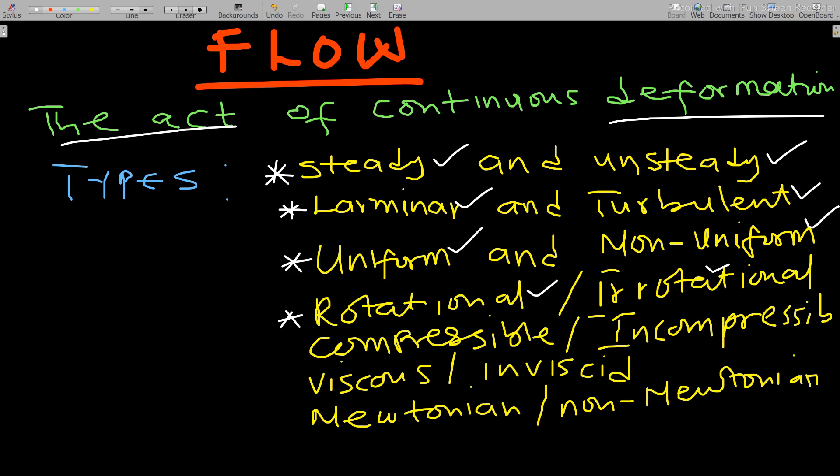Compressible flow is a type of flow in which the density of the fluid changes at a particular point in time. For incompressible flow, the density does not change.